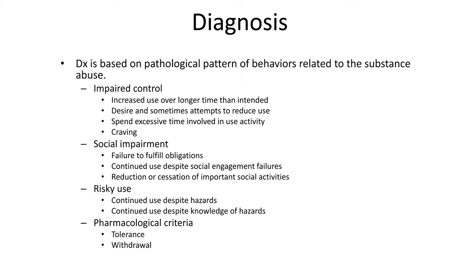For diagnosis, diagnosis is based on pathological patterns of behavior related to the substance abuse. We think about impaired control. With impaired control, increased use over longer time than intended is common. Desire and sometimes attempts to reduce use are common. Lots of times I have people with substance use disorders that come in and they will tell me that they have had several failed attempts at managing their disorder. People with this disorder spend excessive time involved in activity related to the substance use, things like finding the drug and then actually using the drug and being high and then withdrawals. And then cravings for the drug, that's part of impaired control.